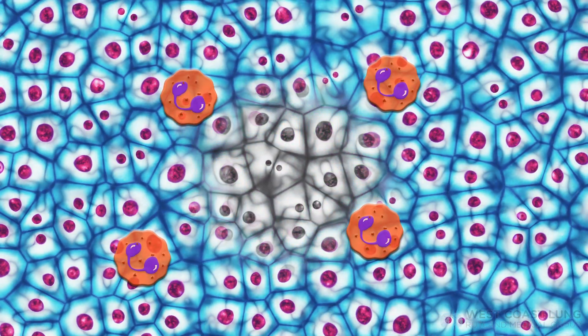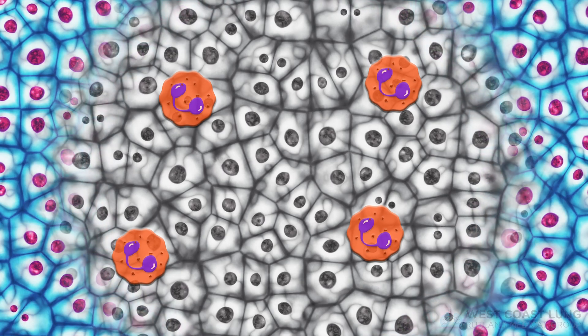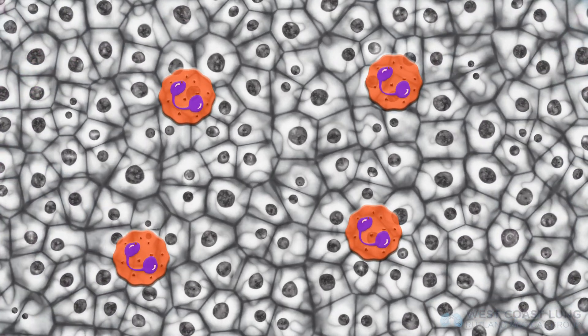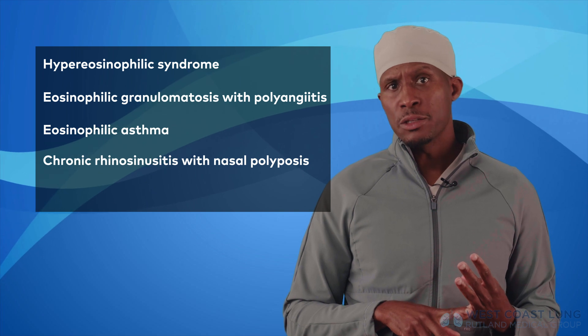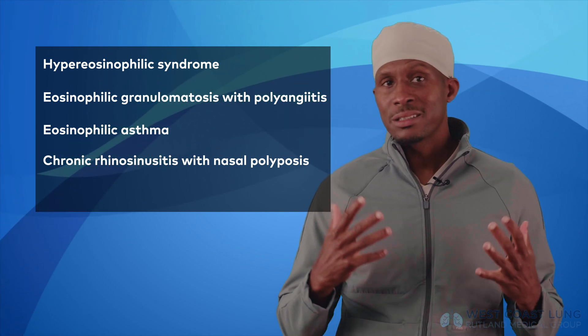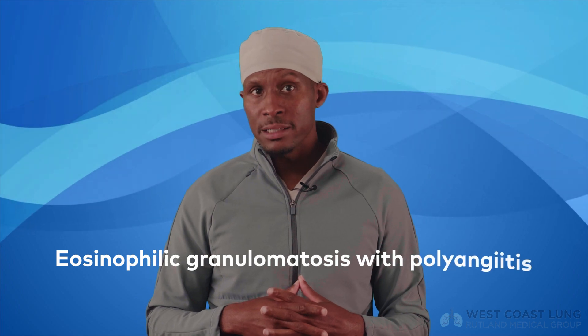I've talked about the eosinophil before. There are all sorts of white blood cells that work in your body. The eosinophil is a white blood cell heavily associated with allergy in the Western world, and its presence can lead to significant tissue damage. There are a ton of diseases where the eosinophil is the problem: hypereosinophilic syndrome, eosinophilic granulomatosis with polyangiitis, eosinophilic asthma, chronic rhinosinusitis with nasal polyposis, eosinophilic pneumonia, just to name a few. Today I want to talk about my 62-year-old patient who I diagnosed with eosinophilic granulomatosis with polyangiitis, or EGPA.